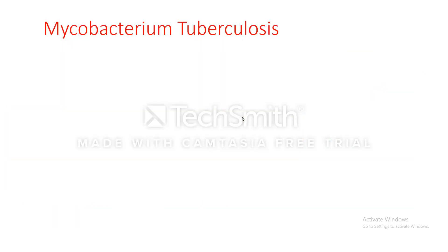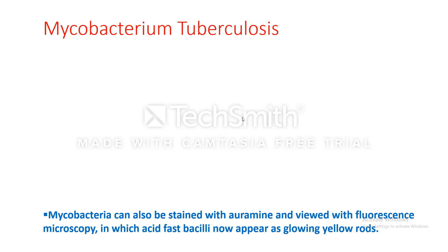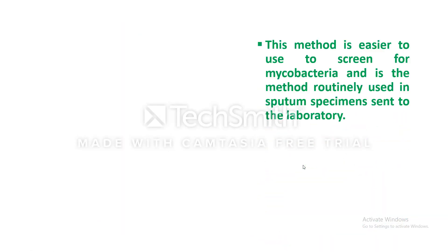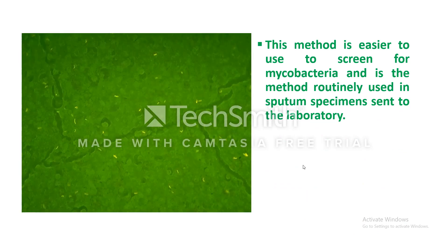Mycobacteria can also be stained with auramine and viewed with fluorescence microscopy, in which acid-fast bacilli appear as glowing yellow-red rods. This method is easier to use to screen for Mycobacteria and is the method routinely used in sputum specimens sent to the laboratory.